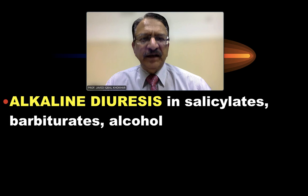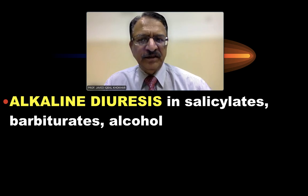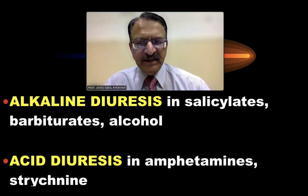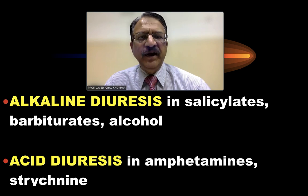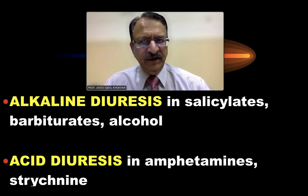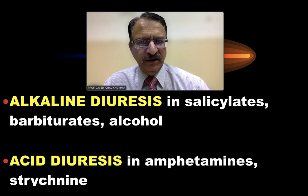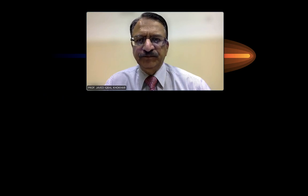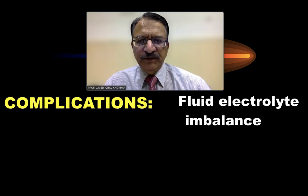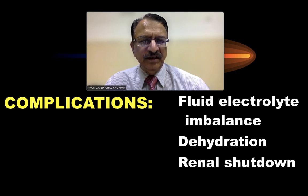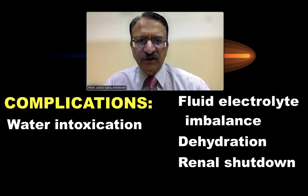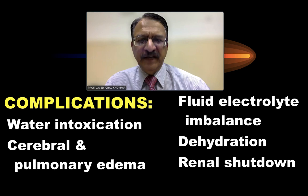Sometimes alkaline diuresis is done, and this is especially done when the poisoning is with salicylates, barbiturates, or alcohol. And acid diuresis is done in cases of amphetamines and strychnine. So there are two types of diuresis — alkaline and acid — used in different poisoning situations. The complications of this procedure are that there can be fluid and electrolyte imbalance, dehydration, renal shutdown or complications for renal functions, water intoxication, and cerebral and pulmonary edema.